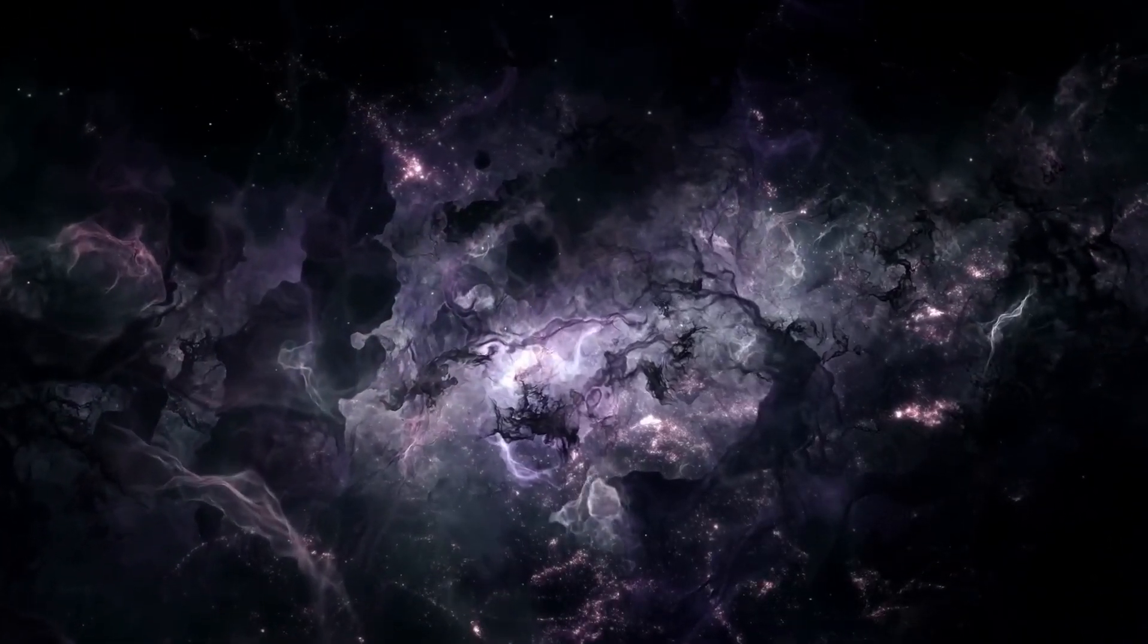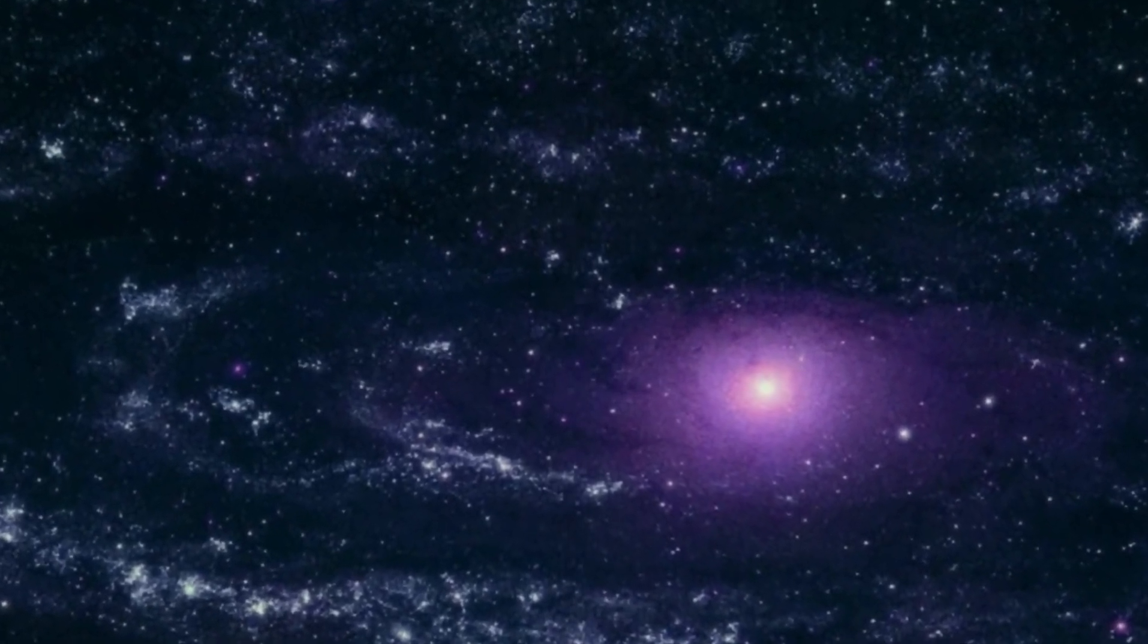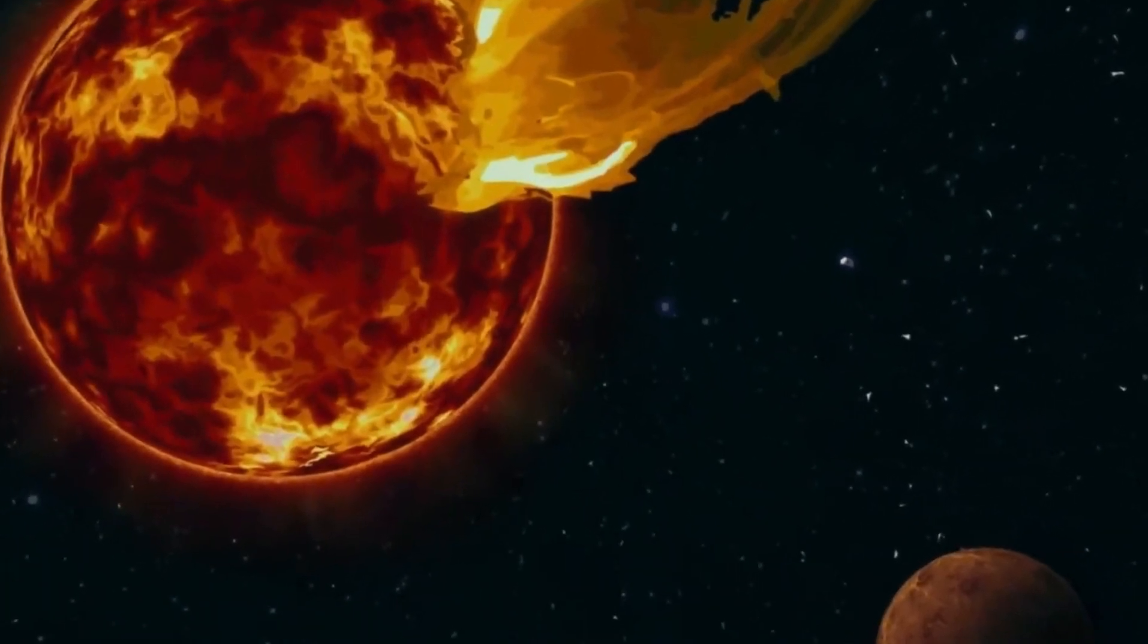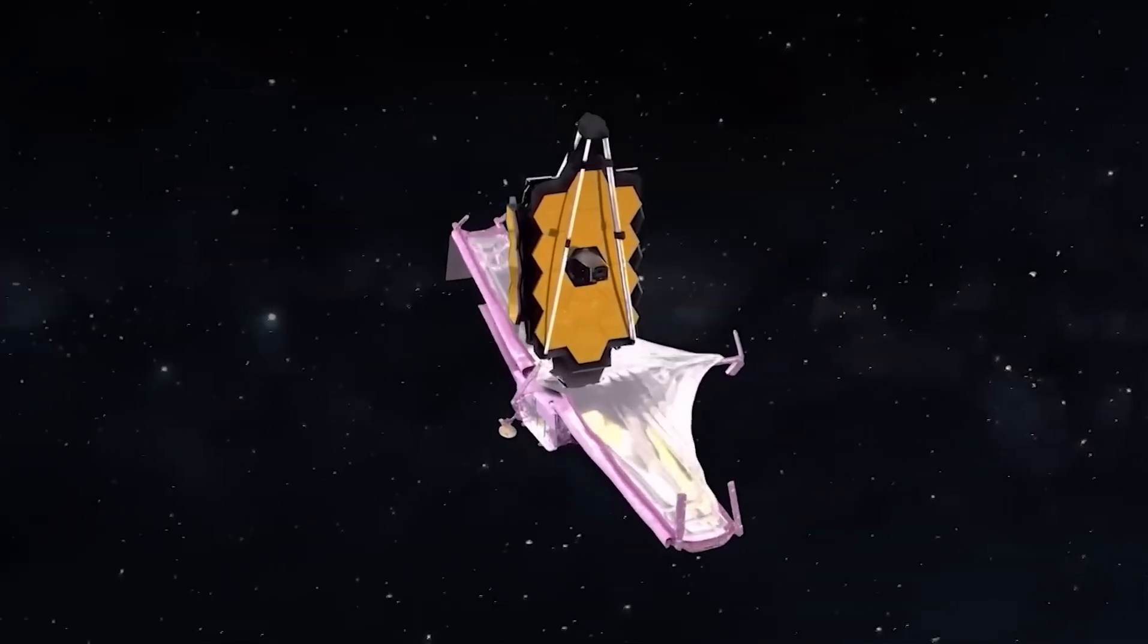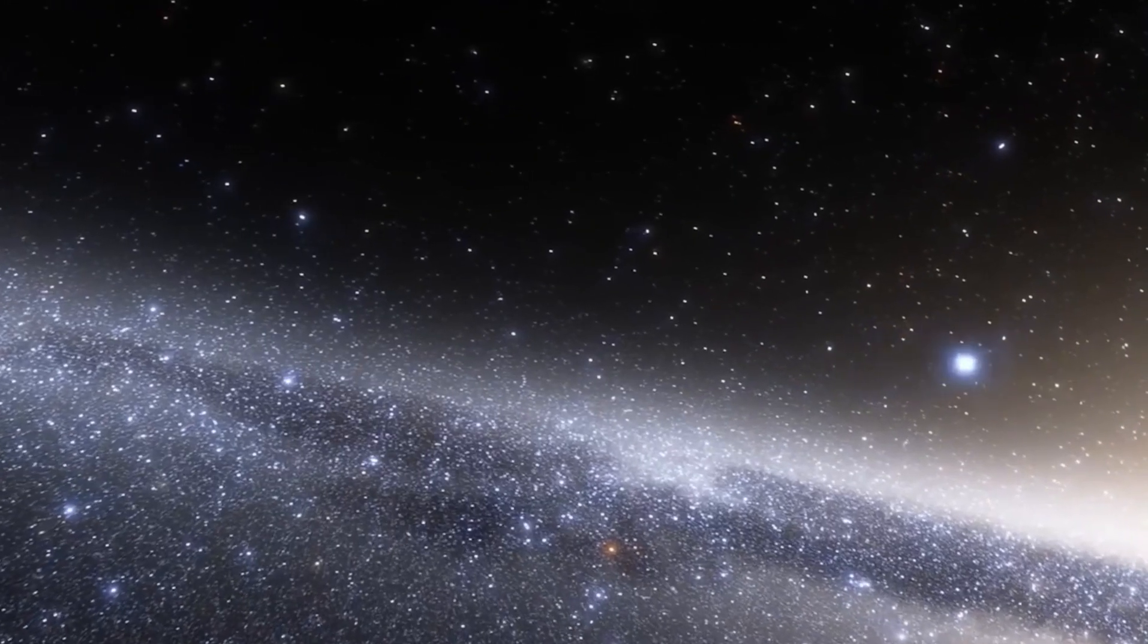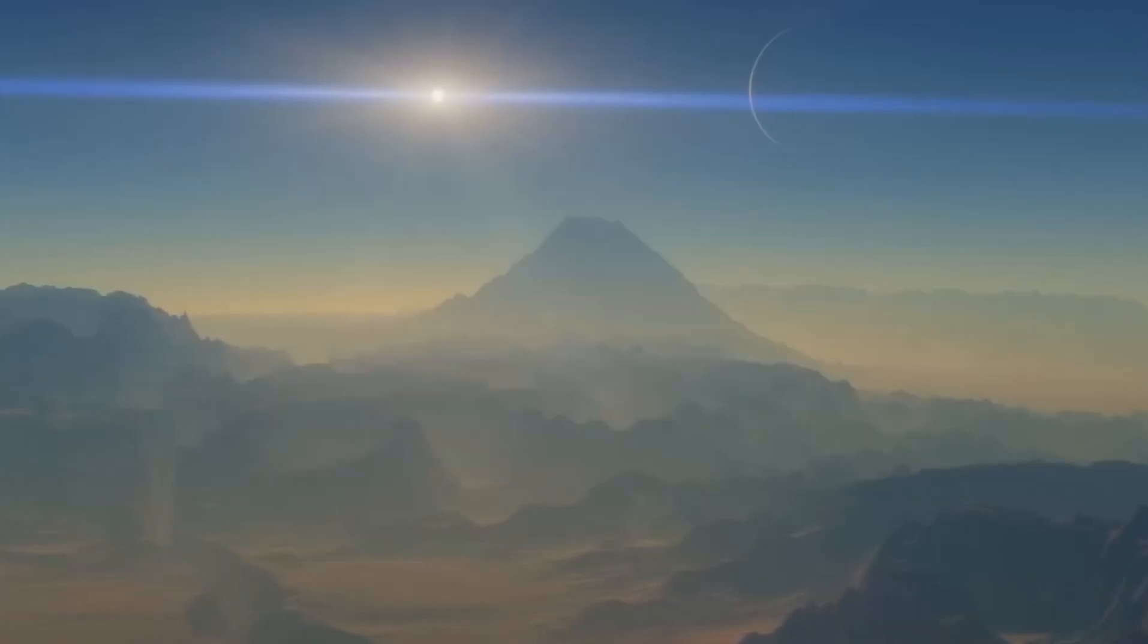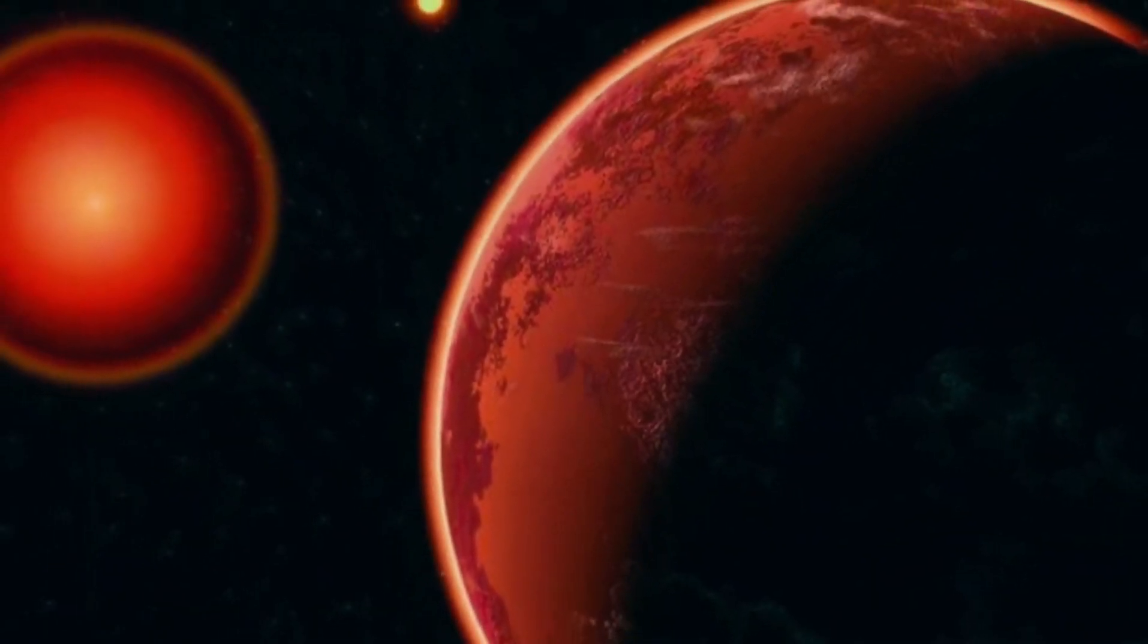They started thinking about this telescope in 1996, but it went through a lot of changes. After a big redesign in 2005, they finished building it in 2016. It's a $10 billion masterpiece named after James E. Webb, who was in charge of NASA in the 1960s. It was launched on December 25, 2021, from French Guiana. By January 2022, it was in its spot in space about 1.5 million kilometers away from Earth. The first picture it took was shown to the public on July 11, 2022.